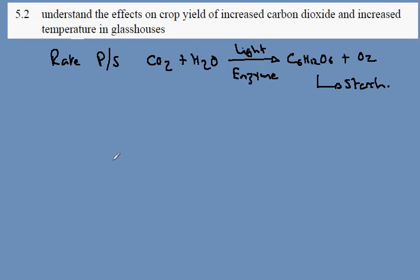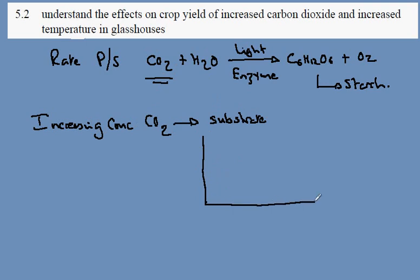So let's take a look first of all at increasing the concentration of carbon dioxide. So therefore carbon dioxide is the substrate. And theoretically according to our previous learning on enzymes we can draw a graph of this effect. So here we're increasing the concentration of the substrate which is carbon dioxide.